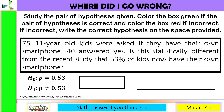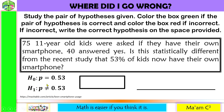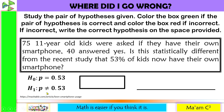75 eleven-year-old kids were asked if they have their own smartphone; 40 answered yes. Is this statistically different from the recent study that 53% of kids now have their own smartphone? Converting 53% to decimal gives 0.53. For our null hypothesis: P is equal to 0.53 — this is the population proportion from the recent study. For the alternative hypothesis: P is not equal to 0.53. The keyword here is 'different,' which has no direction. Therefore, this is correct — it is a two-tailed test.